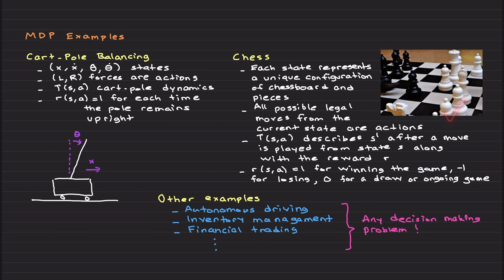You can also look at the chess game. Here each state represents a unique configuration of the chess board and its pieces. All possible legal moves from the current state are the actions — this is a much more complex MDP setup. The goal is to train an agent to play chess against an opponent. The transition dynamics describe how you go to the next state after a move is played from state S, along with reward R. For chess the reward process can get complex, but simply: R equals 1 for winning, minus 1 for losing, and 0 for a draw or if the game is ongoing.